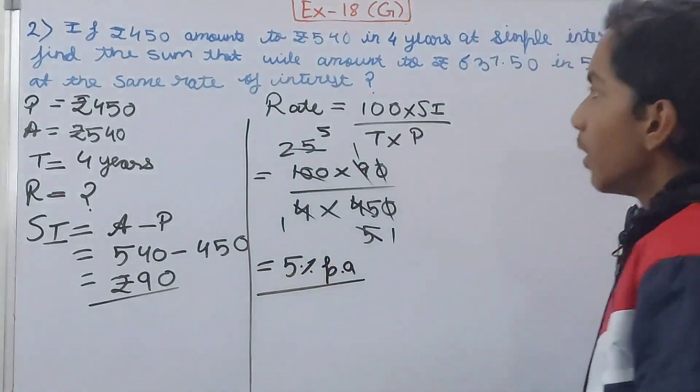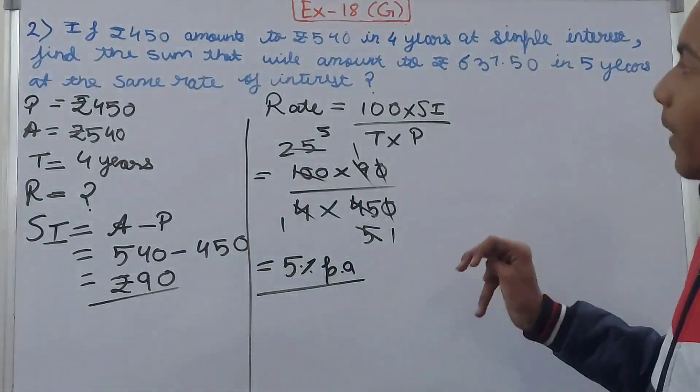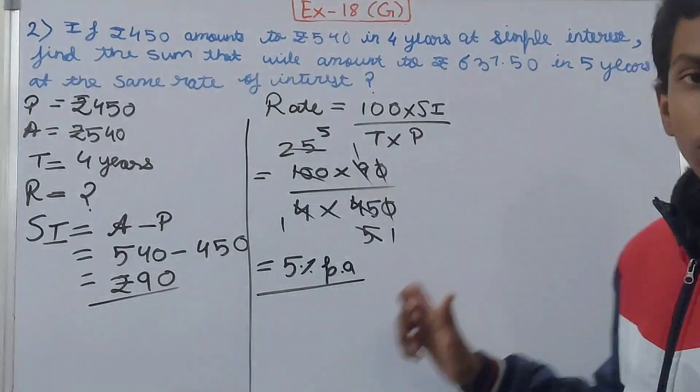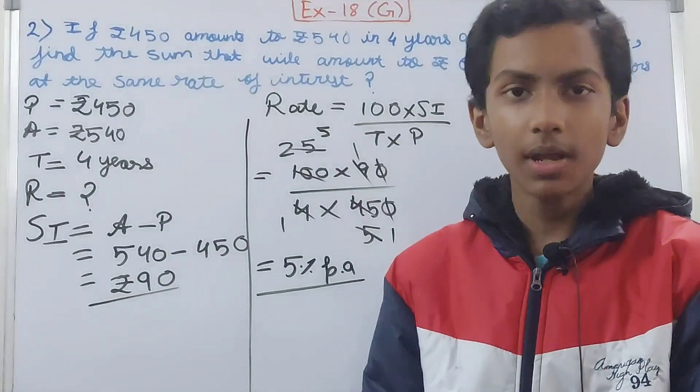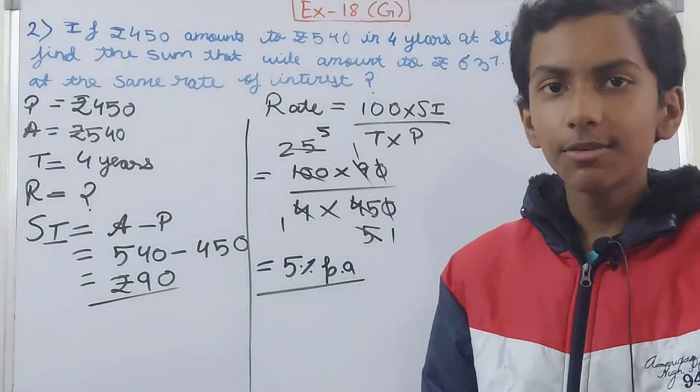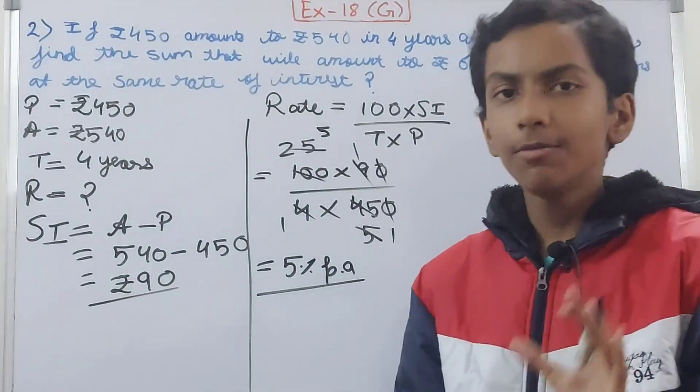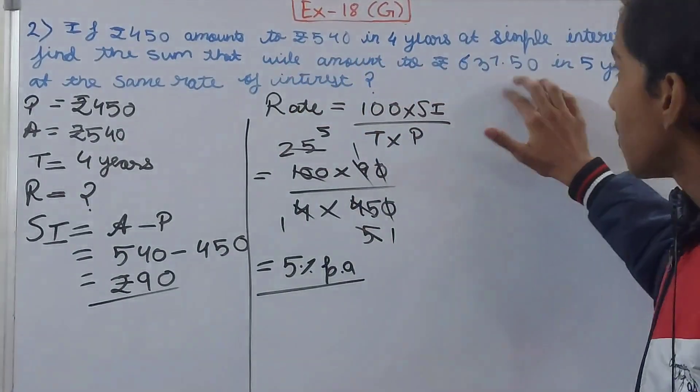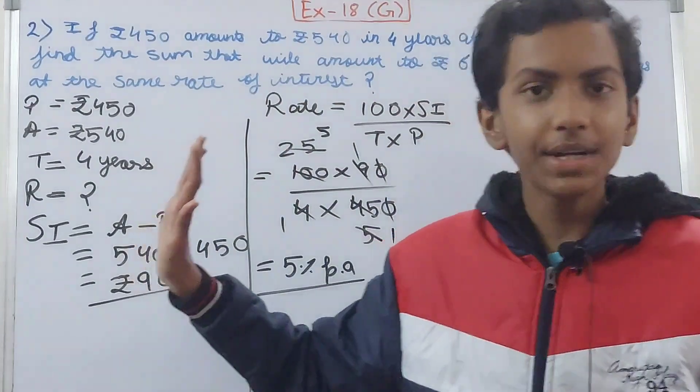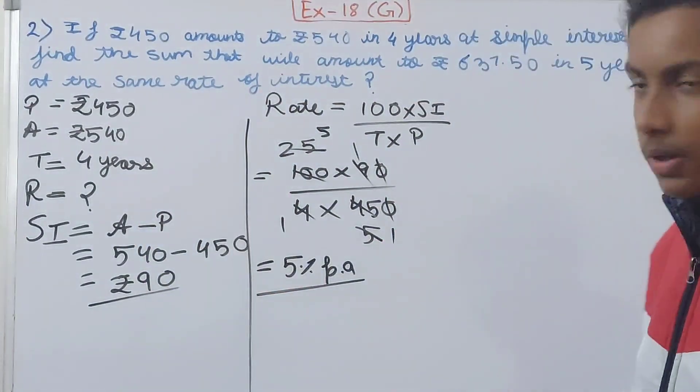Now it's asking us to find the sum that will amount to, so this means we have to find the new principal. Find the sum that will amount to ₹637.50, but what we have to find is the new principle. So we'll find that out as well.